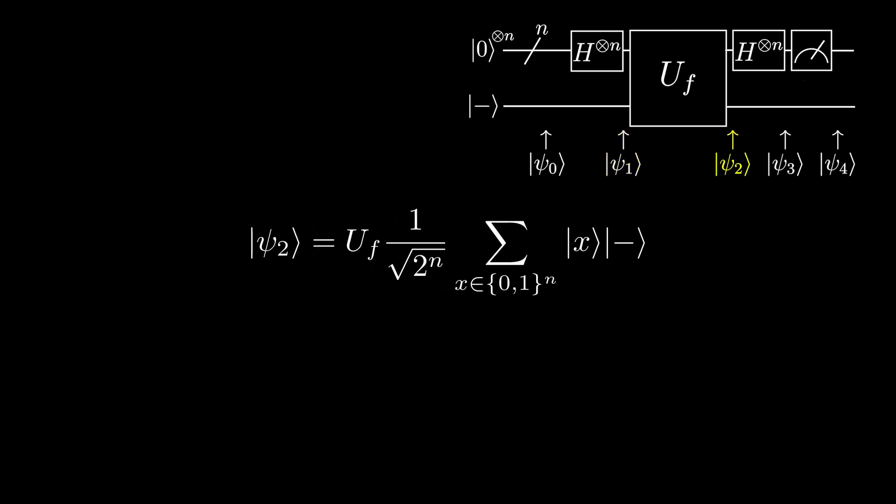At ψ₂, we apply the oracle. Since the target qubit is in the minus state, we use the phase oracle property, so the state becomes 1 over root 2 to the power of n times the sum over all x, negative 1 to the power of f(x), x minus.